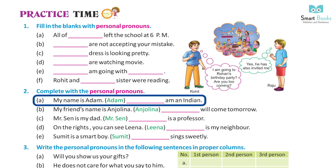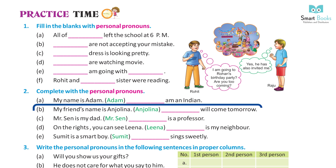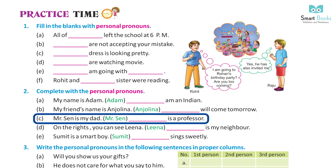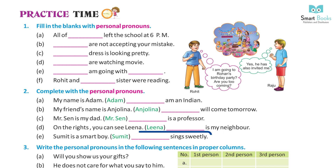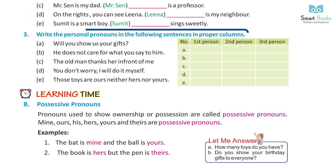Complete with personal pronouns. A: My name is Adam. I am an Indian. B: My friend's name is Angelina. She will come tomorrow. C: Mr. Sen is my dad. He is a professor. D: On the right you can see Lena. She is my neighbor. E: Summit is a smart boy. He sings sweetly.